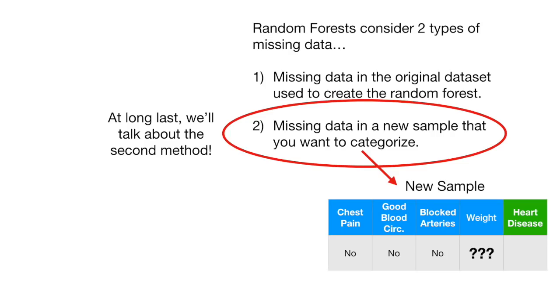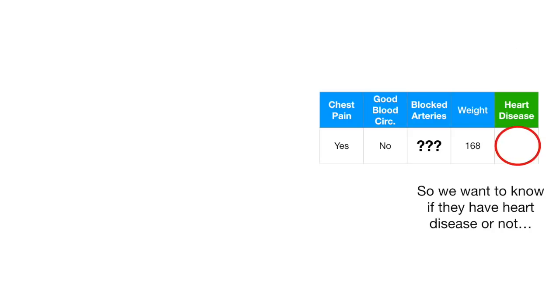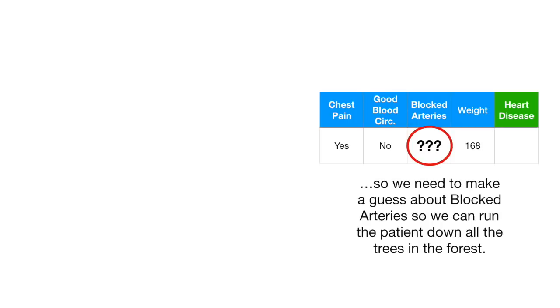Okay, enough fun stuff. Let's get back to the missing data problem. At long last, we'll talk about the second method. This is when we have missing data in a new sample that we want to categorize. Imagine we had already built a random forest with existing data and wanted to classify this new patient. So we want to know if they have heart disease or not. But we don't know if they have blocked arteries. So we need to make a guess about blocked arteries so we can run the patient down all the trees in the forest.